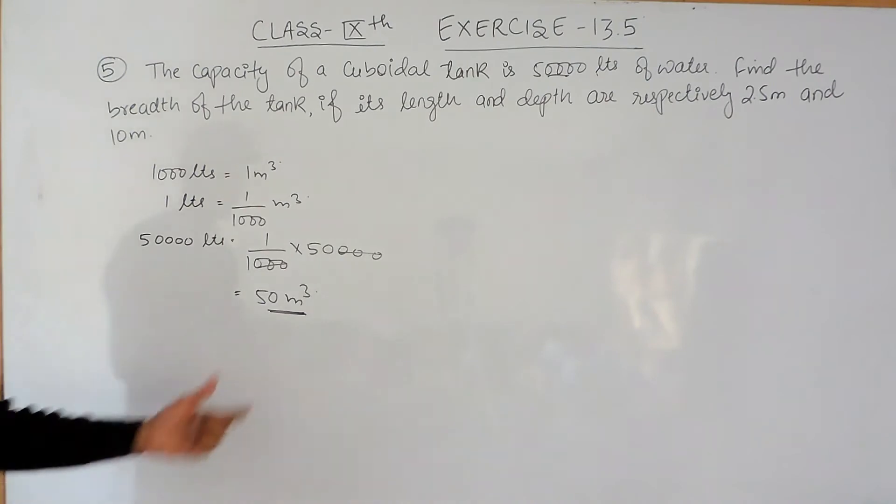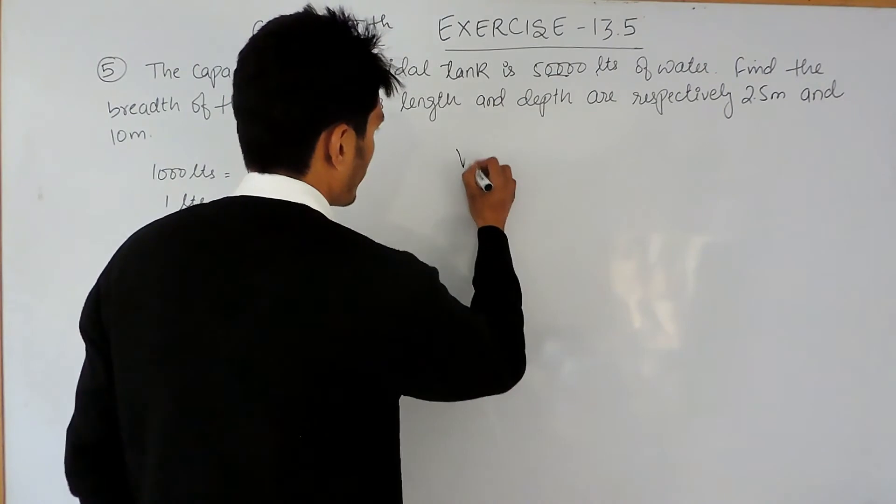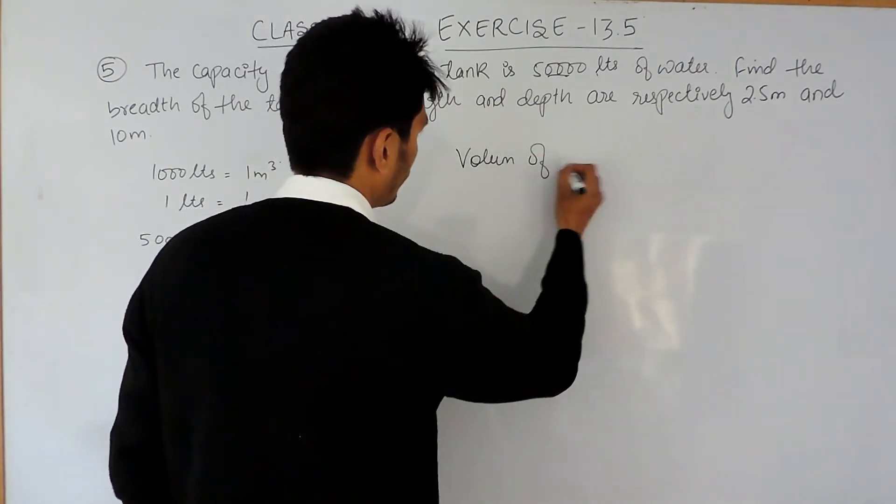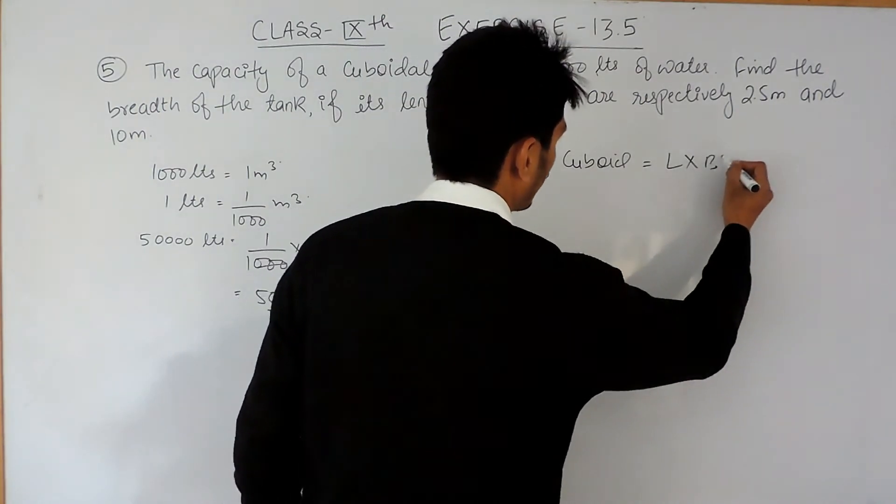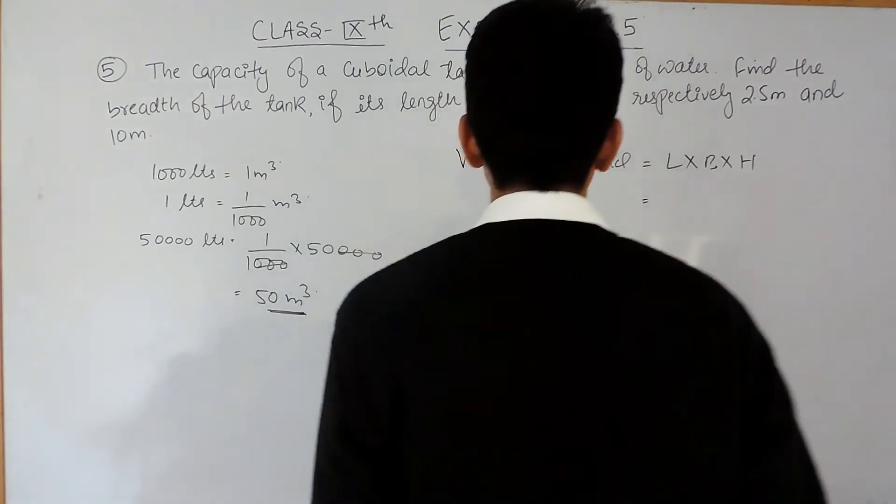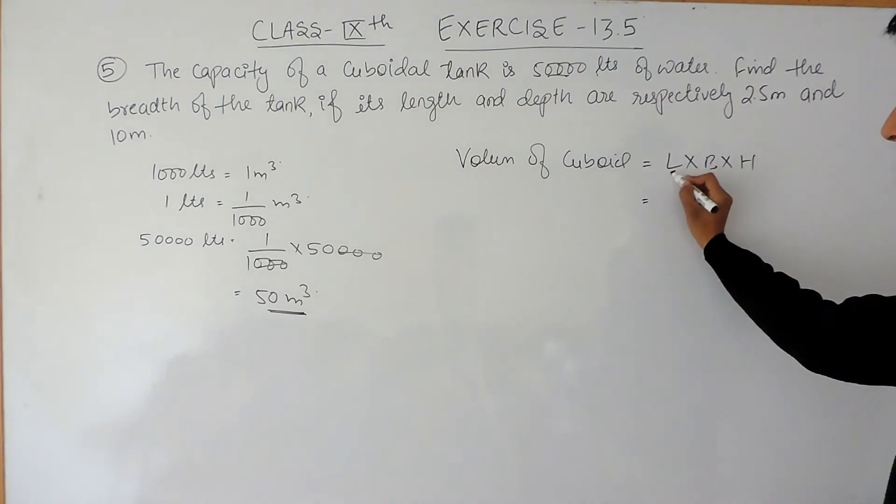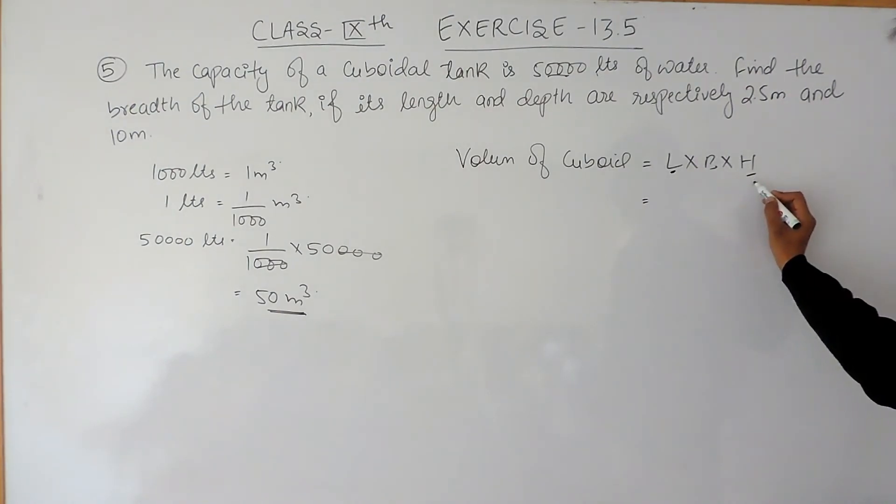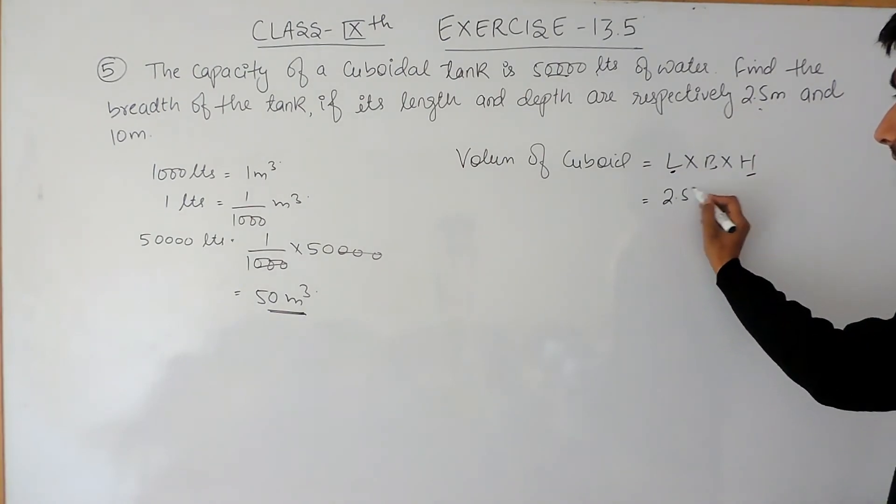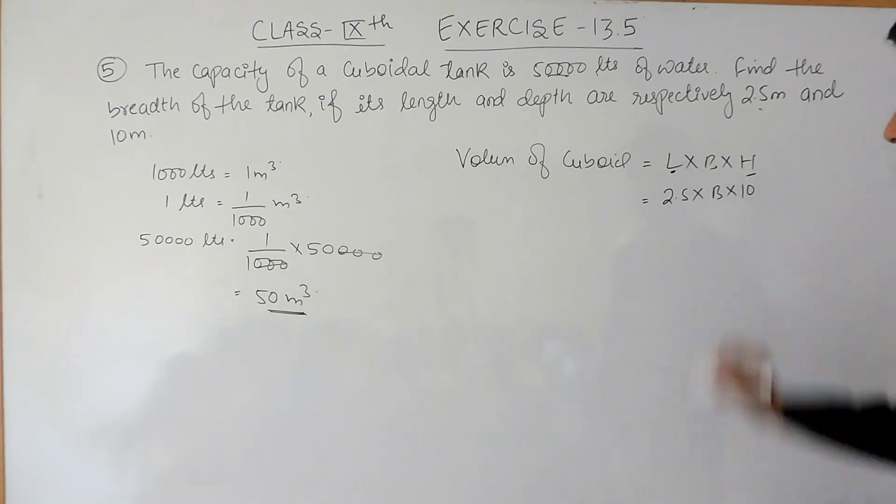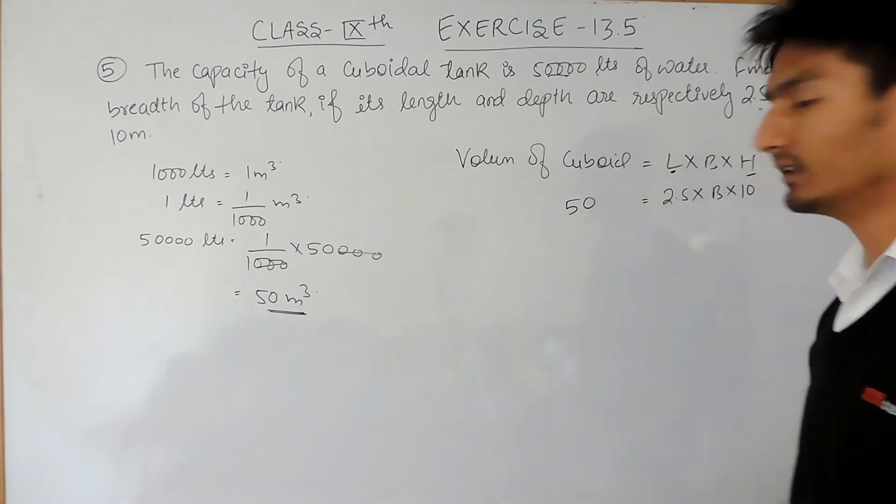So the volume of this tank should be 50 meter cube. Now, volume of a cuboid is length multiplied by breadth multiplied by height. Length and depth, that is height, is given to us as 2.5 and 10 meters and volume is given to us as 50 meter cube.